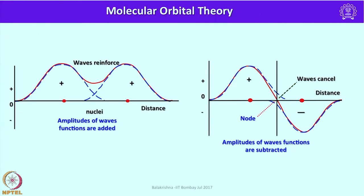We should remember: when atomic wave functions are summed up we get bonding molecular orbitals; when the atomic wave functions are subtracted, an antibonding molecular orbital is generated. In this picture, the first case shows the summation of atomic orbitals — a bonding molecular orbital is generated where amplitudes of wave functions are added. In the second case, amplitudes of wave functions are subtracted, representing an antibonding molecular orbital.